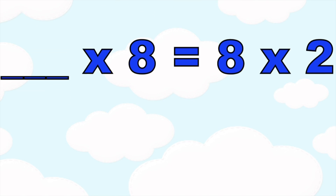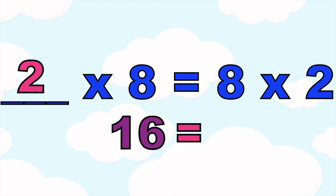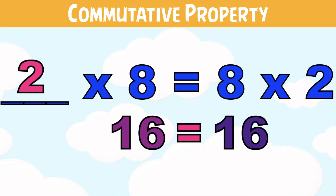How about: blank times 8 is equal to 8 times 2. What is the missing number? It's 2! Because 2 times 8 is equal to 16, and 8 times 2 is equal to 16. This is because of the commutative property of multiplication — even though you interchange the position of the two factors, their product will remain the same.